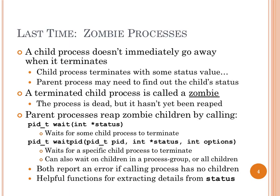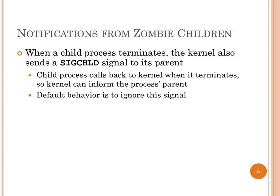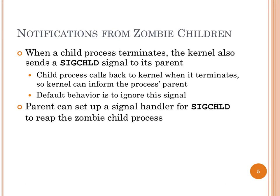Any questions about any of this so far? To pick up the new material: when a child process terminates, the parent needs to know about it so it can reap the zombie child. The OS makes sure the parent process receives a special signal indicating the child terminated — it's called SIGCHLD. The name drops the second 'i' in 'child', but that's how they do it. The default behavior is just to ignore the signal — thankfully, if your child process terminates, it doesn't make you terminate. You can register a SIGCHLD handler and then call wait or waitpid to reclaim that child.